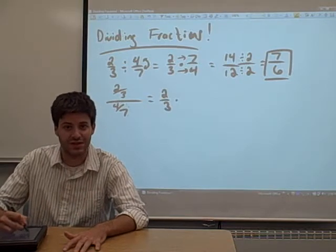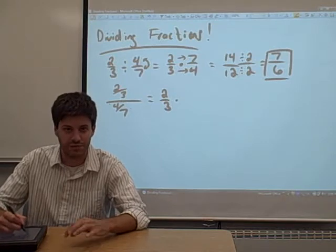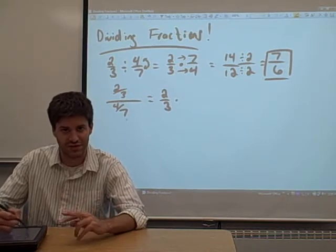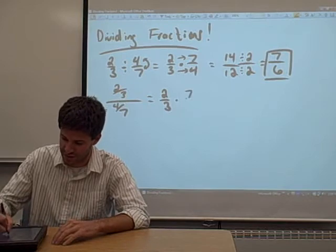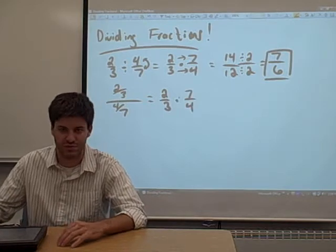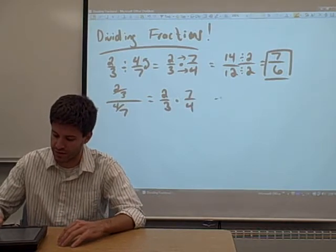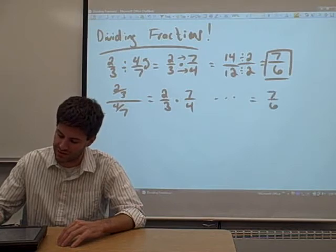And then you take the fraction that's in the denominator down here, and you flip it over and you multiply. So if you flip over 4/7 again, we get 7/4, and you multiply. Just like we did before. We get 7/6.